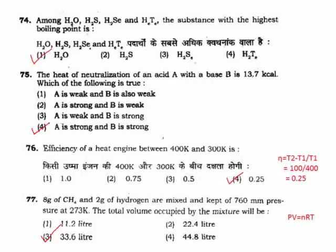Question 76: Efficiency of a heat engine between 400 kcal and 300 kcal — correct answer is Option 4.